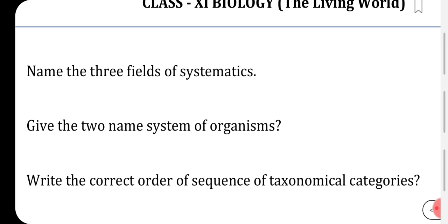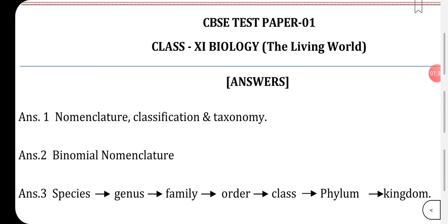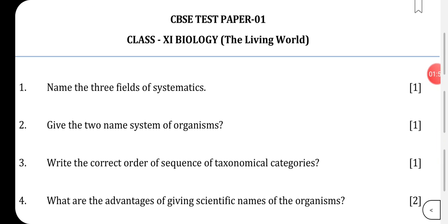The next question: write the correct order of sequence of taxonomical categories. The answer would be species, followed by genus, then family, order, class, and phylum, then at the top will be kingdom. This is the sequence.